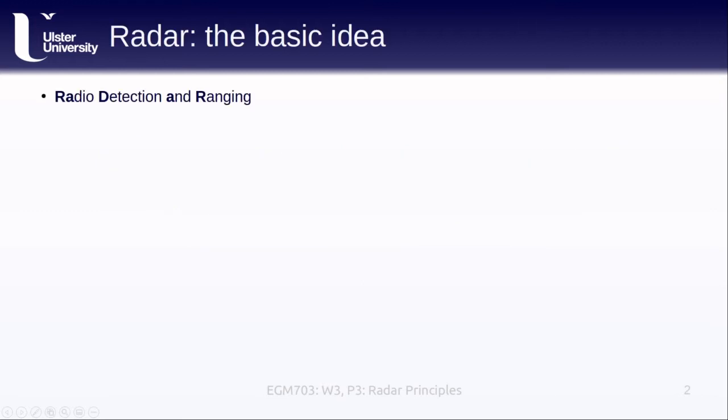So radar is a word that originally stood for radio detection and ranging, though at this point at least in English it's a noun. It's an active microwave remote sensing system. This means that the source of the signal that we're measuring comes from the satellite or the sensor itself rather than being supplied by the sun or emitted by the target that we're looking at.